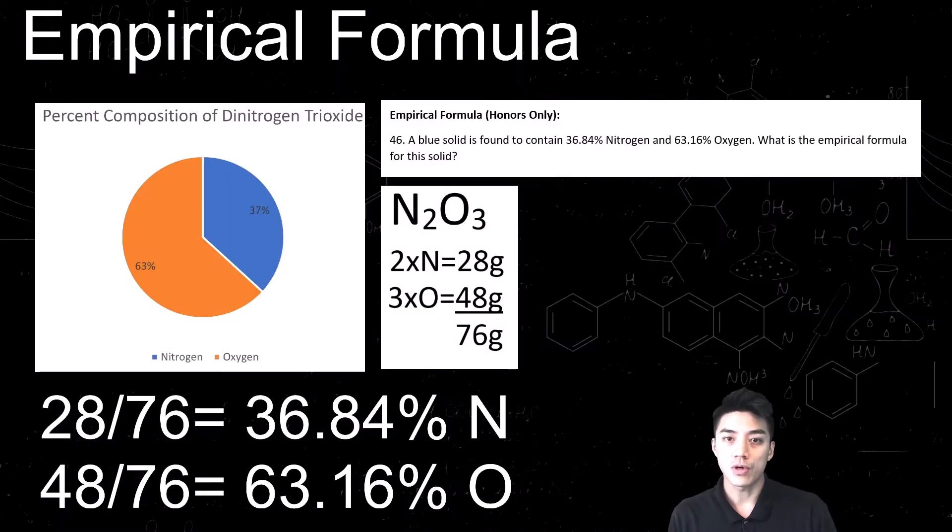An easy way to check your work for empirical formula is by working backwards and finding out what the percent composition is. So we found that our empirical formula is N2O3. We can then find a total and then divide each of the elements' composition into that total to get our percentages.